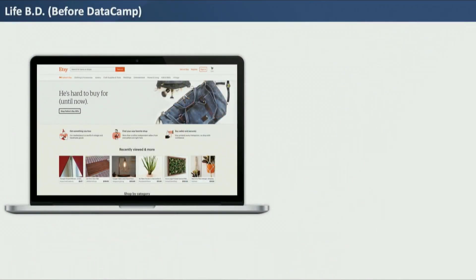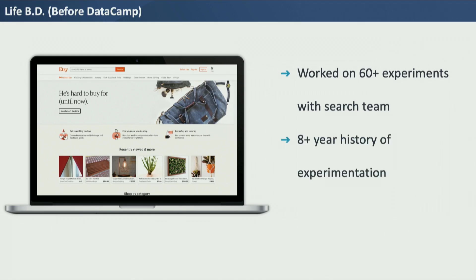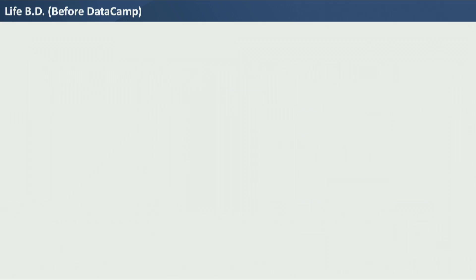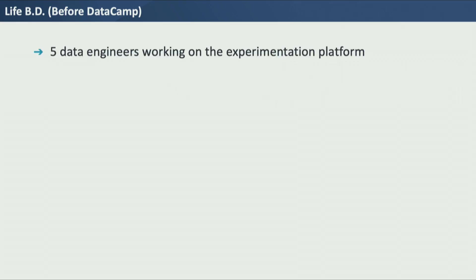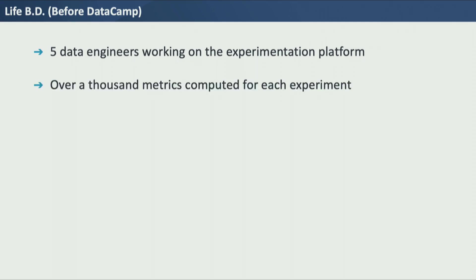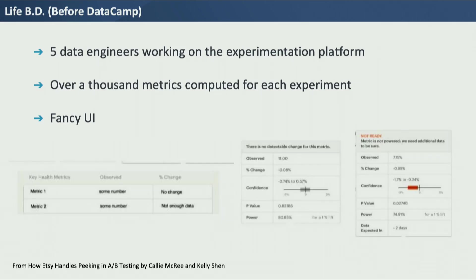Life before DataCamp, I was a data analyst at Etsy, and that's where I got started on experimentation. I worked on over 60 experiments with our search team. Etsy had been doing experimentation for over eight years at that point, running over 500 experiments per year. To support all of this, Etsy had a big team of data engineers — over five of them working full time on the data experimentation platform, which Etsy had custom built. Over a thousand metrics were computed for each experiment, with a really nice UI that visualized confidence intervals and power calculations for detecting a 1% change.